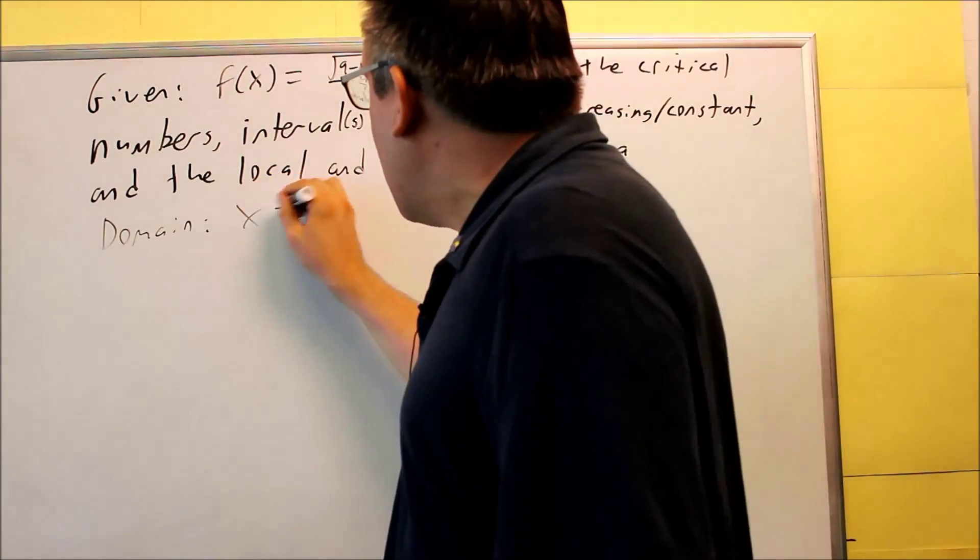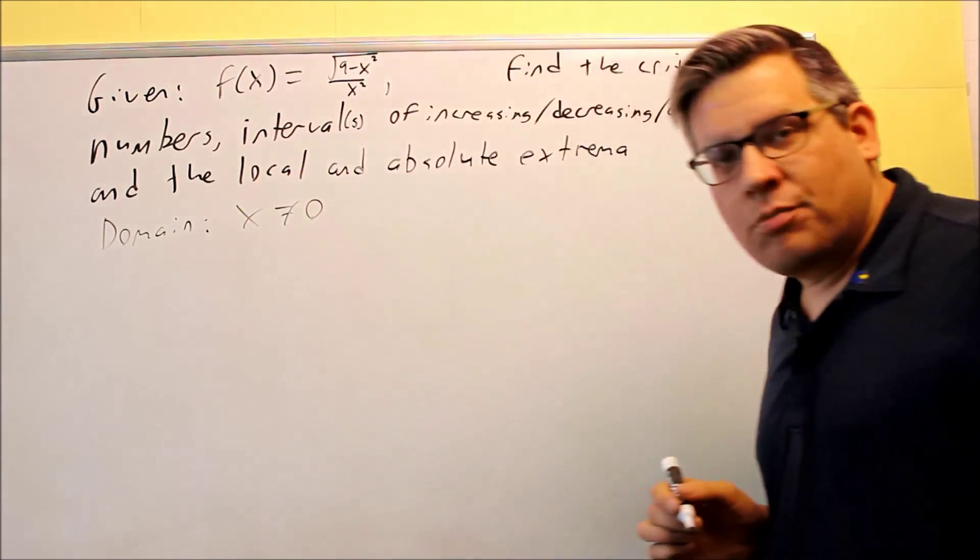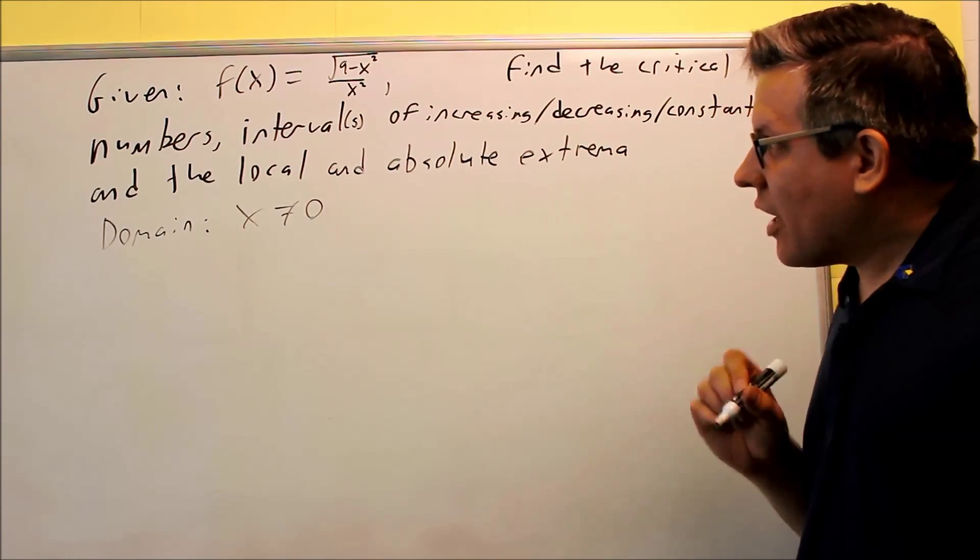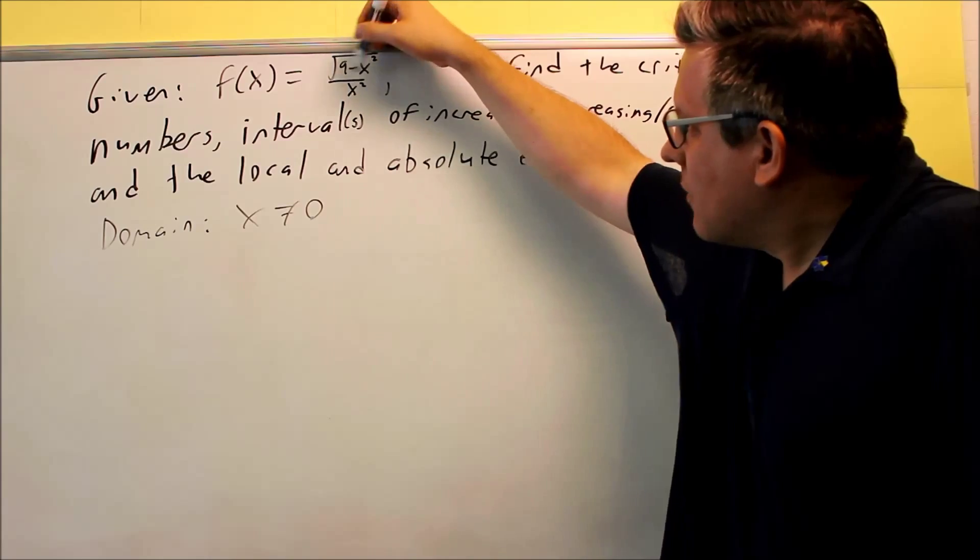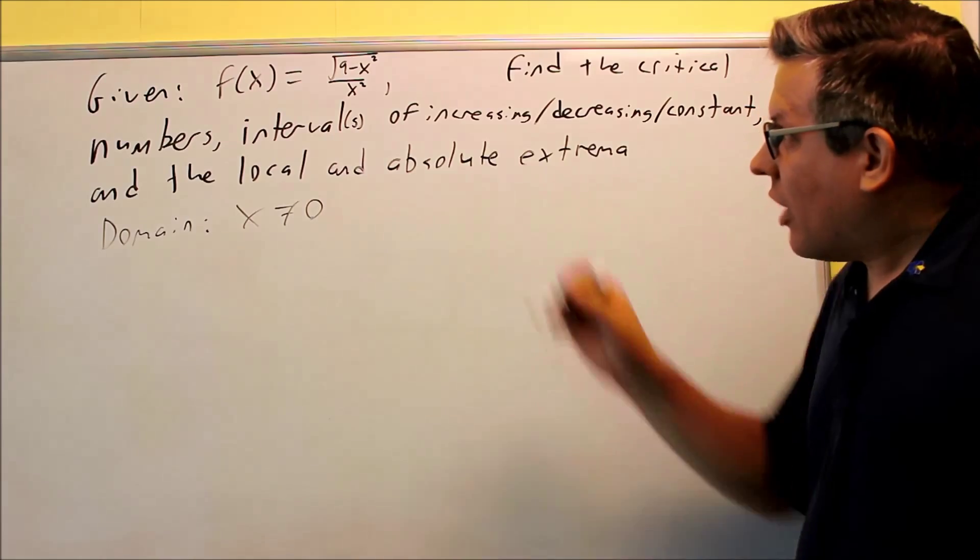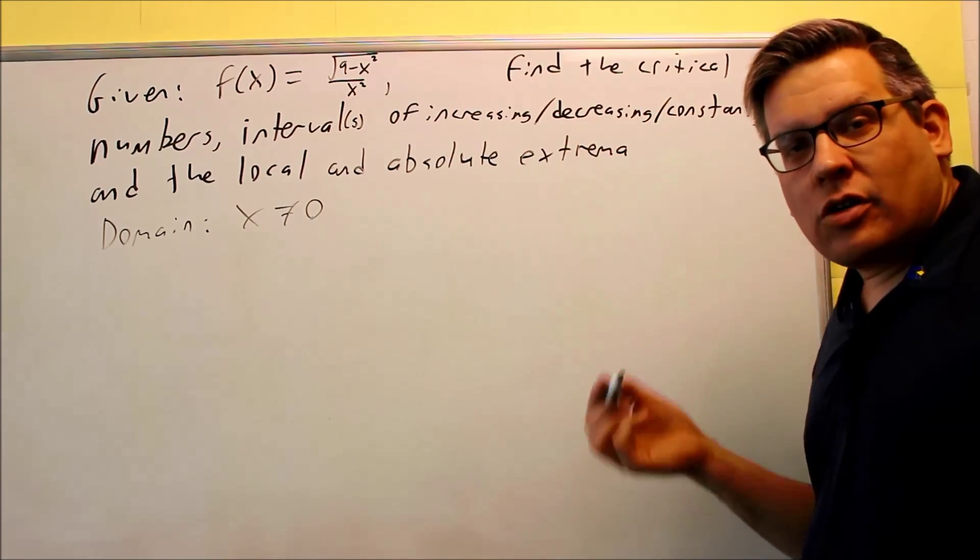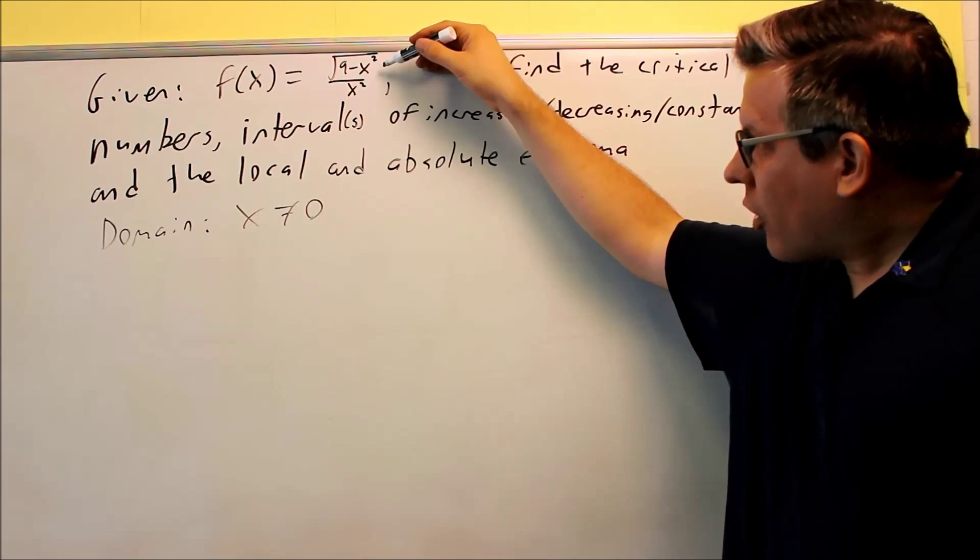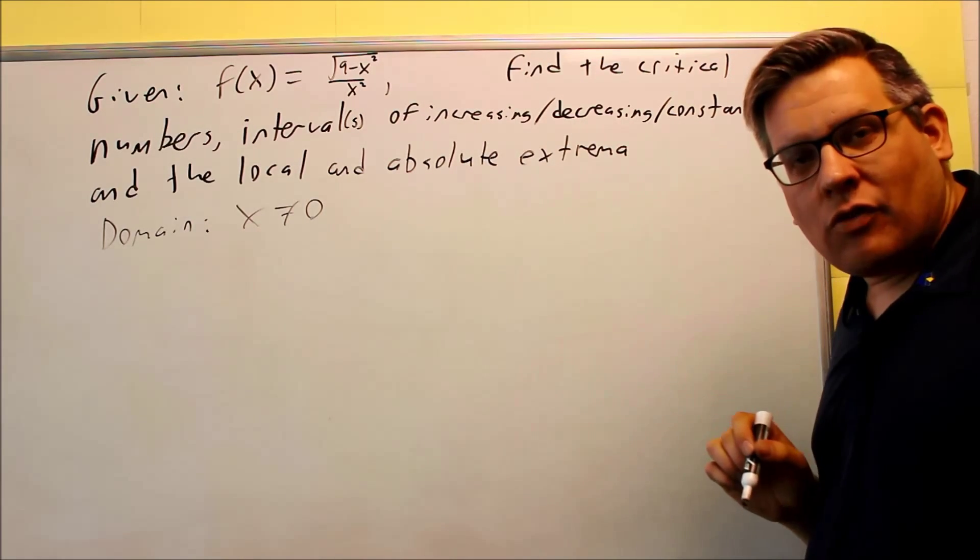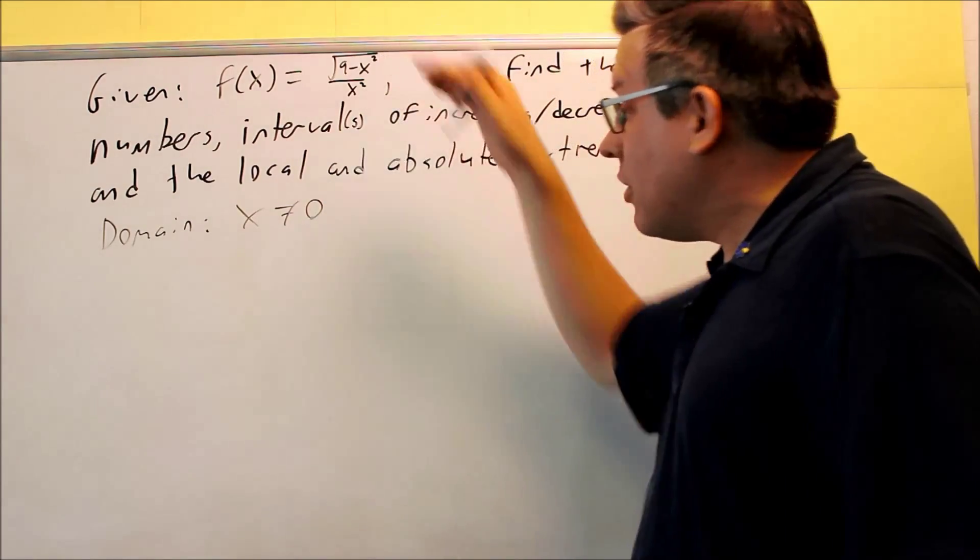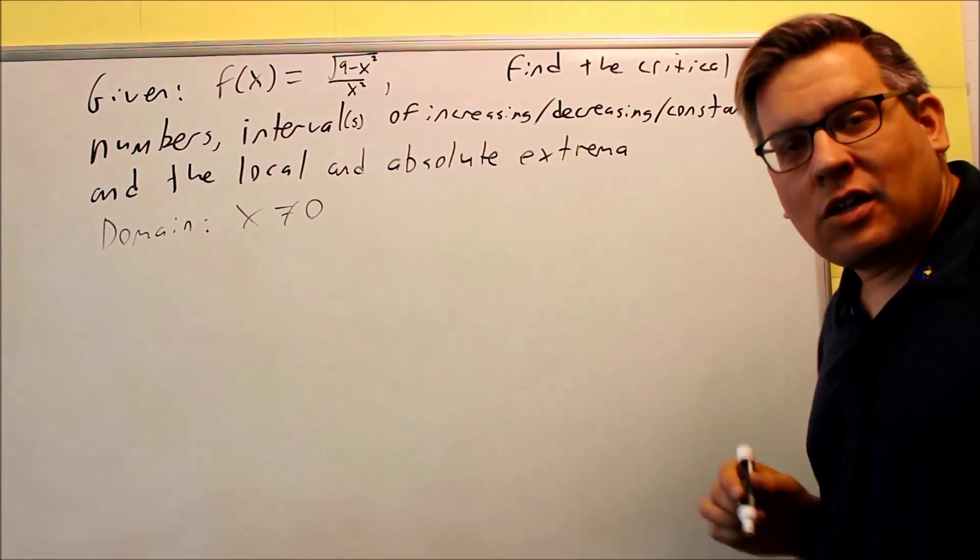First, I know that x cannot equal 0. We know that because we can't divide by 0. Second, let's look at this. Square root has to be positive in the inside. So I know that if I put a 3 in there, I'll get a 0. But if I put anything more than a 3, like a 4, I'm going to get square root of a negative number. So this problem also, I can't use any numbers that are outside negative 3 to 3.